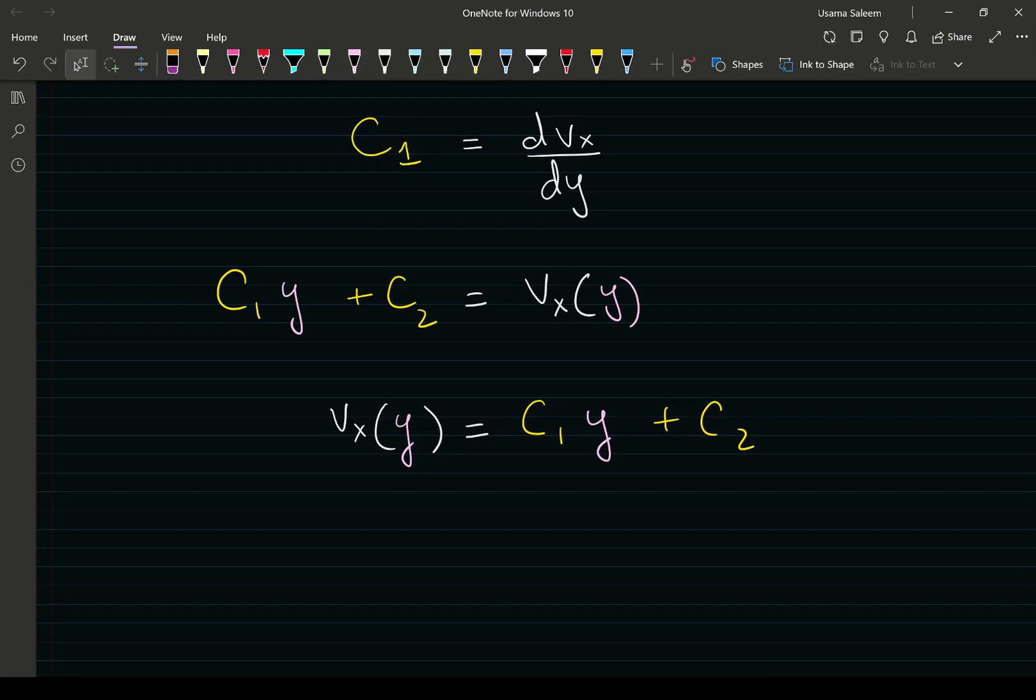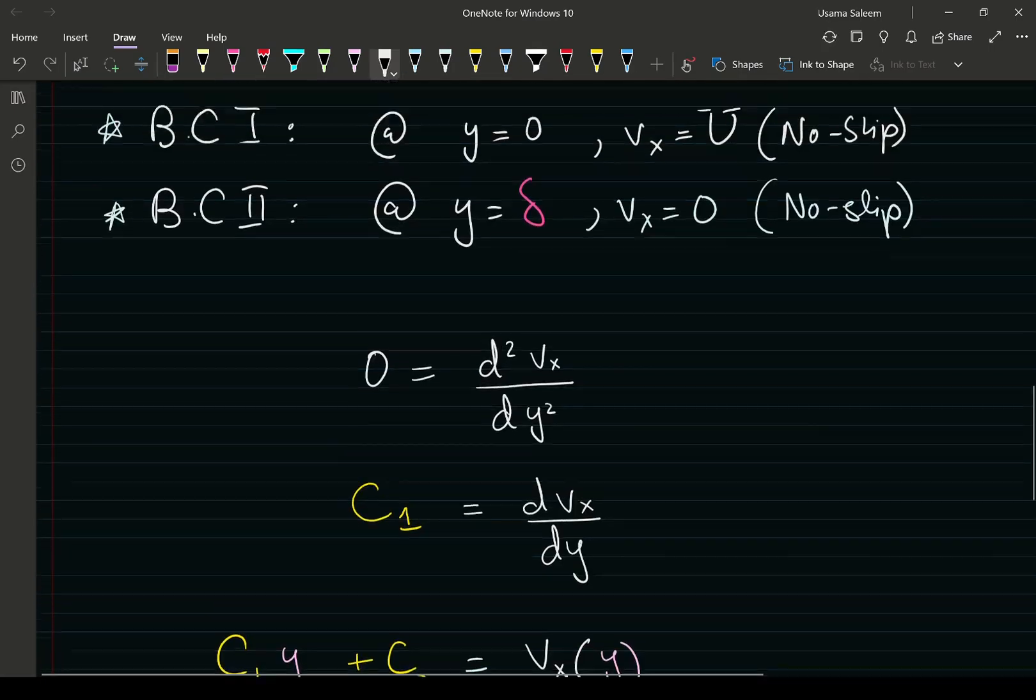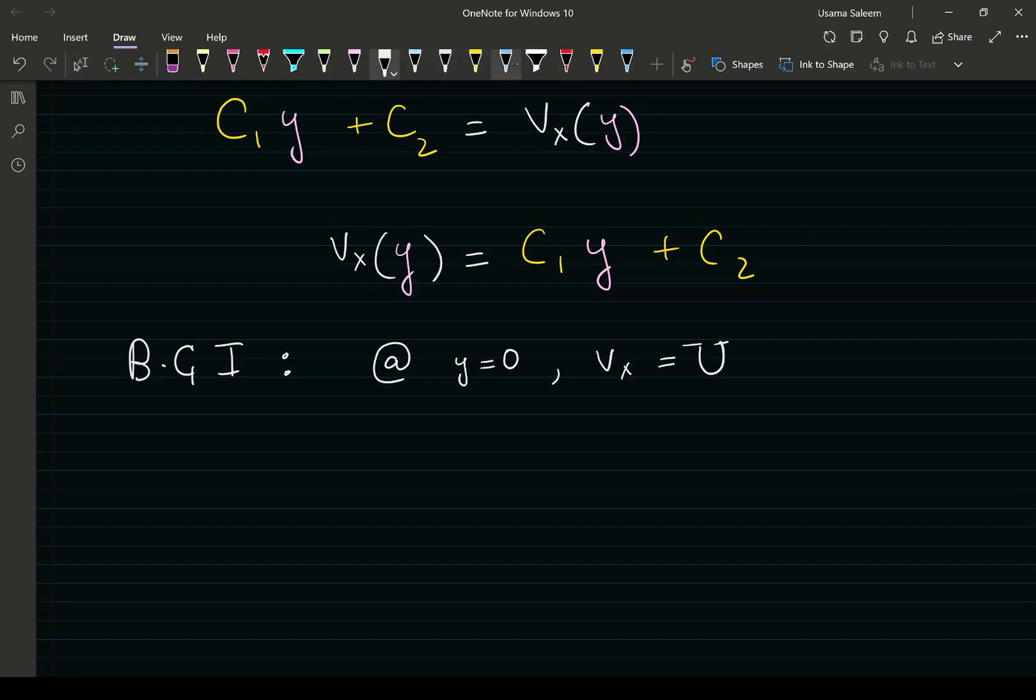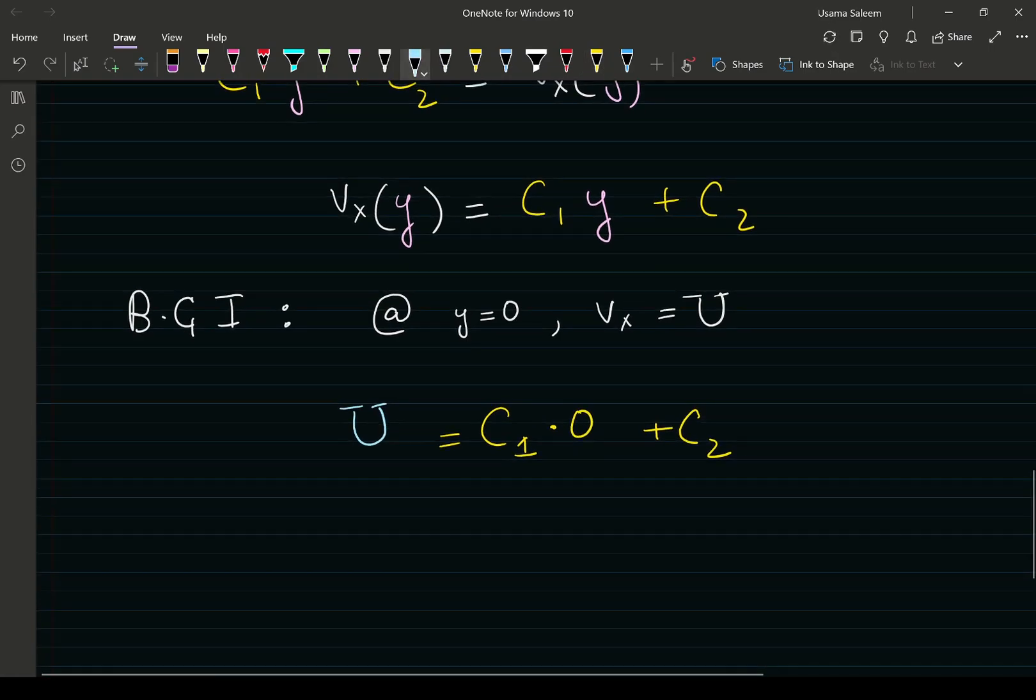Let's start with boundary condition 1. BC1 says that at y equals 0, your velocity is equal to u - the no-slip boundary condition. Upon substituting, we get C1 times 0 plus C2 equals u. So C2 equals u. We have solved for one of our constants of integration.